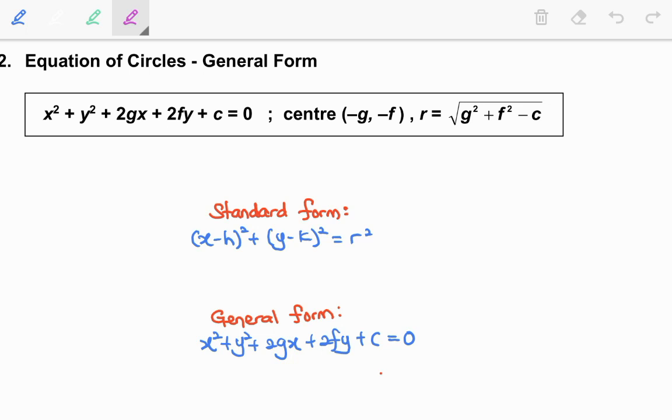where the center is negative g, negative f, and the radius we can find by using this formula: r equal to square root of g squared plus f squared minus c.